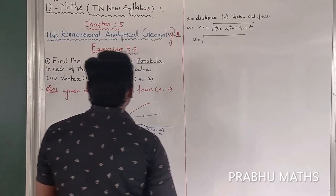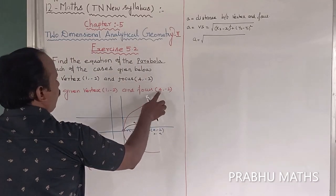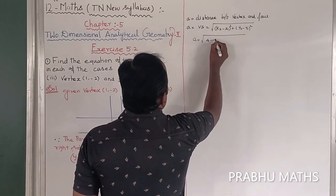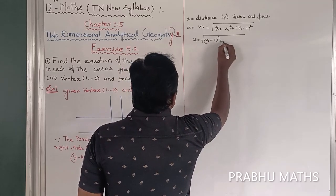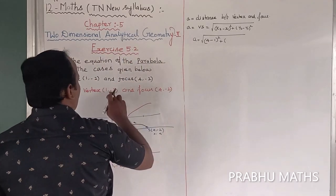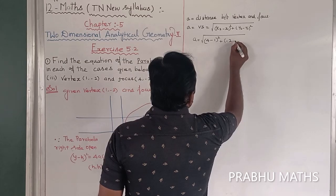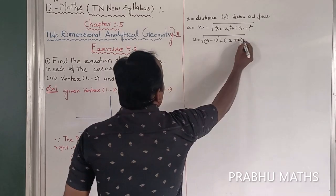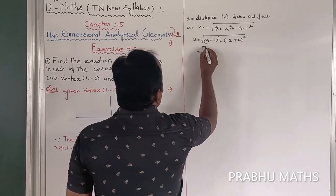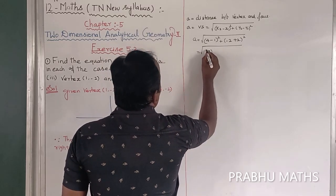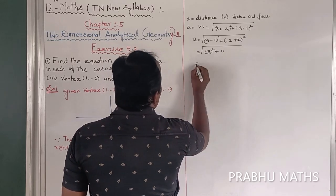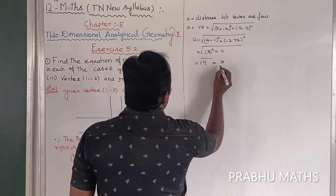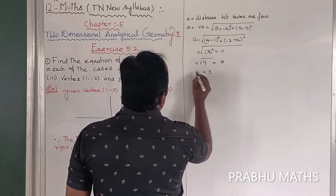Substituting: a = √((4 - 1)² + (-2 - (-2))²) = √((3)² + 0) = √9 = 3. So a is equal to 3.